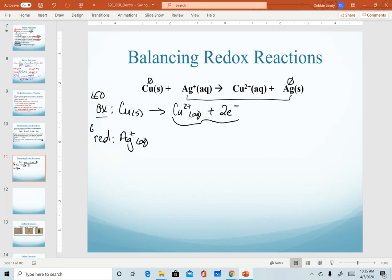For my reduction half reaction, remember the gain of electrons is reduction. When we describe the gain of electrons, that means those are reactants. To balance charges, silver only needs to gain one electron to balance this half reaction.